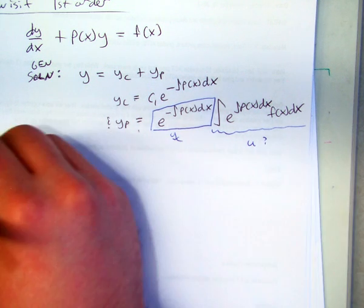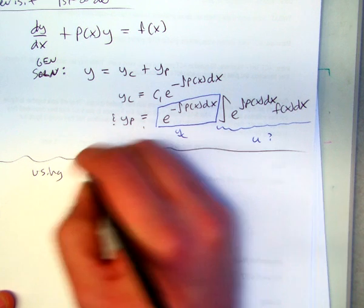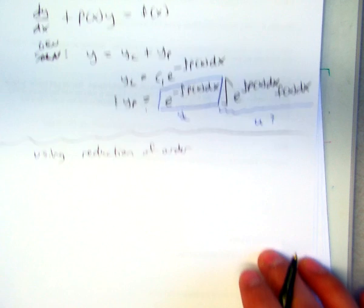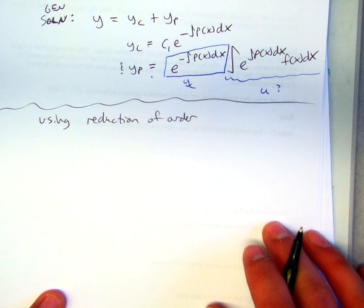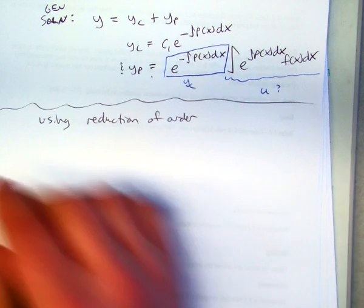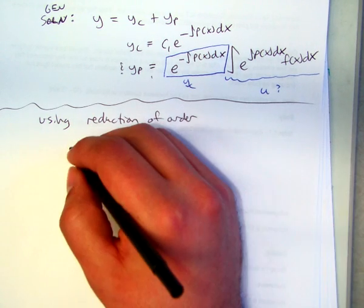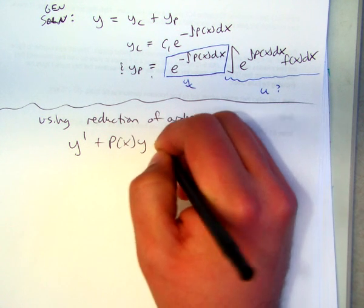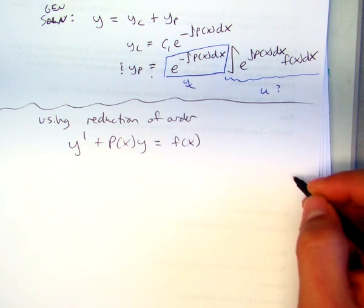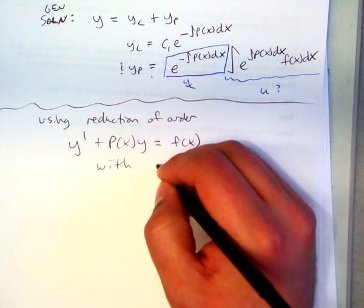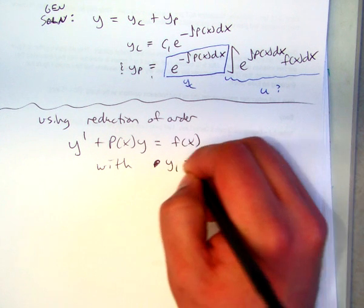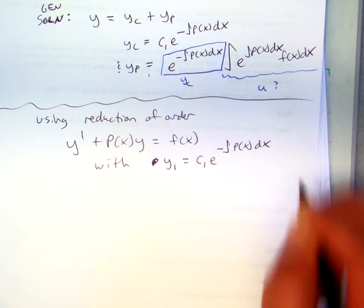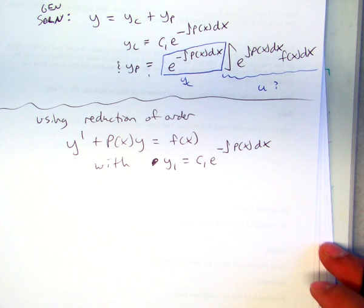So using that same idea from 4.2, reduction of order, we'll start with the same equation. y prime plus p of x y equals some function f of x with y1 equal to c1 e to the minus integral of p of x dx. So this is a known solution.